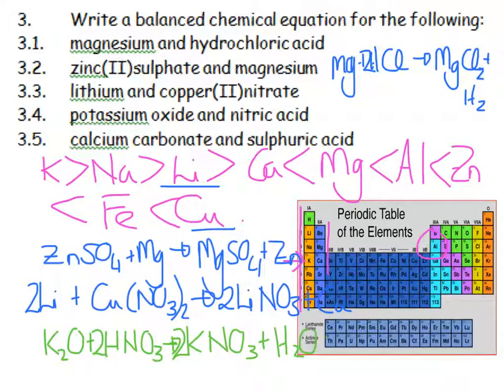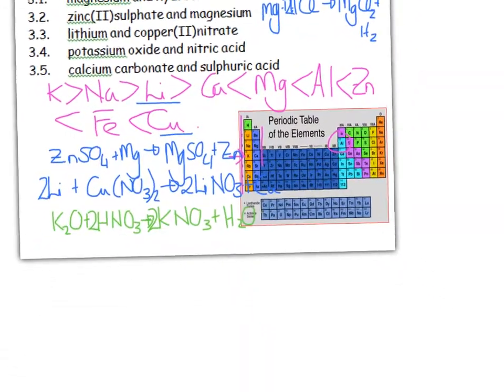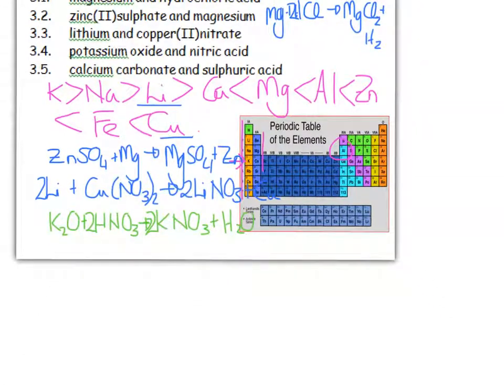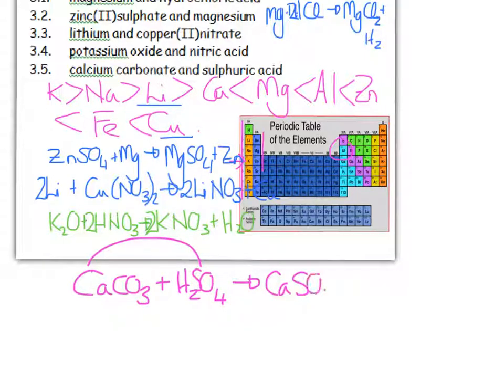And then the last one, calcium carbonate and sulfuric acid. Calcium carbonate plus sulfuric acid gives me metal and gets together with the sulfate ion. So I get calcium sulfate plus carbon dioxide plus water. And that's balanced.